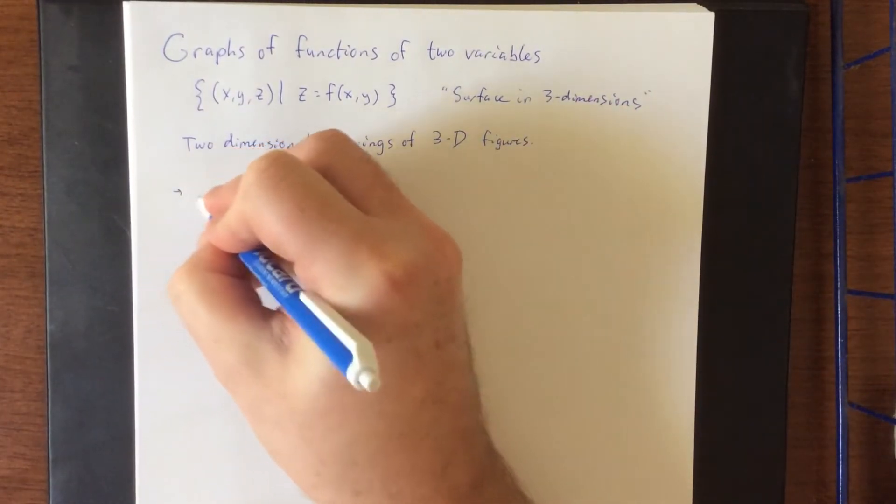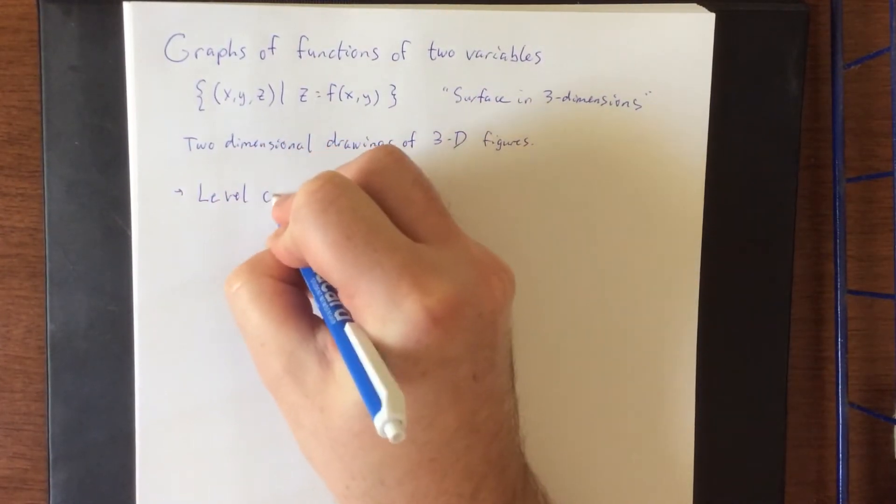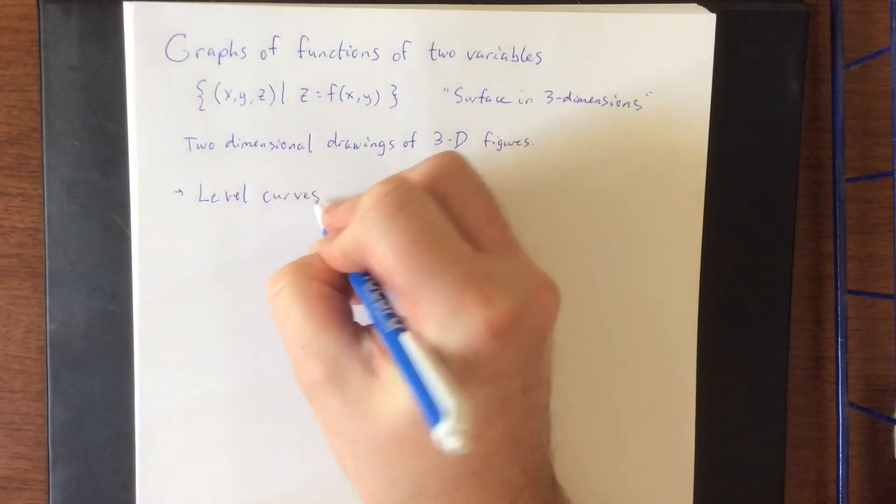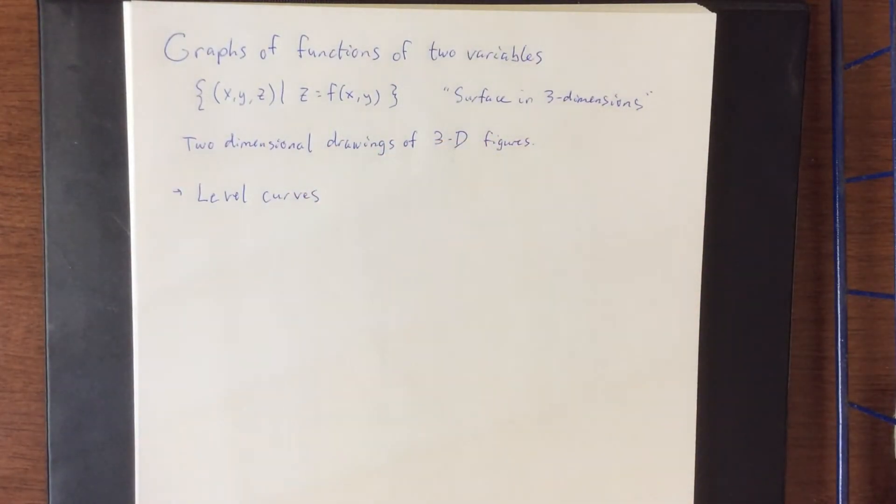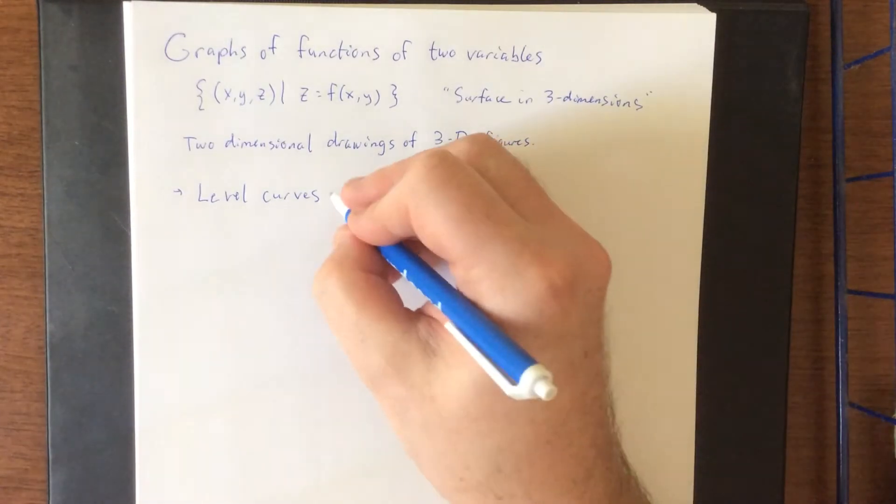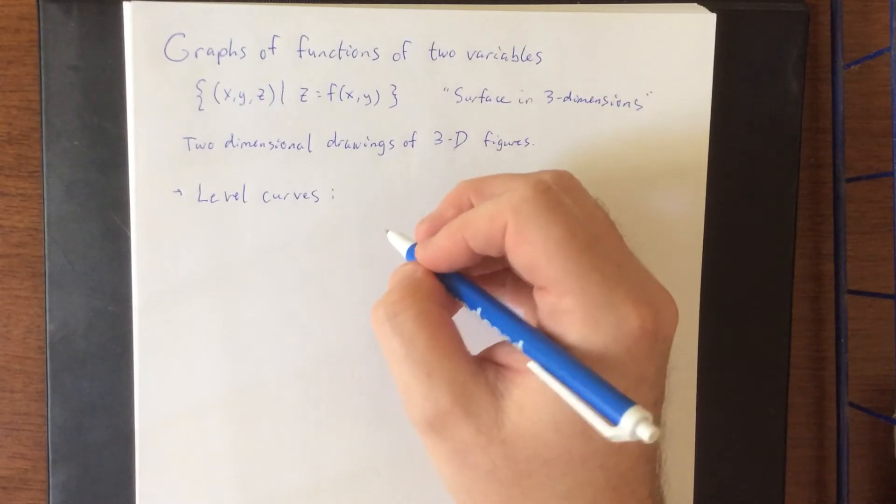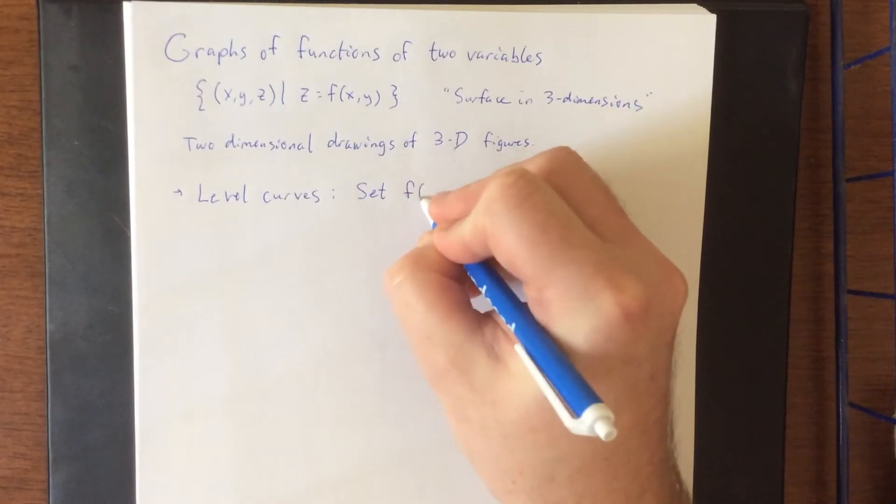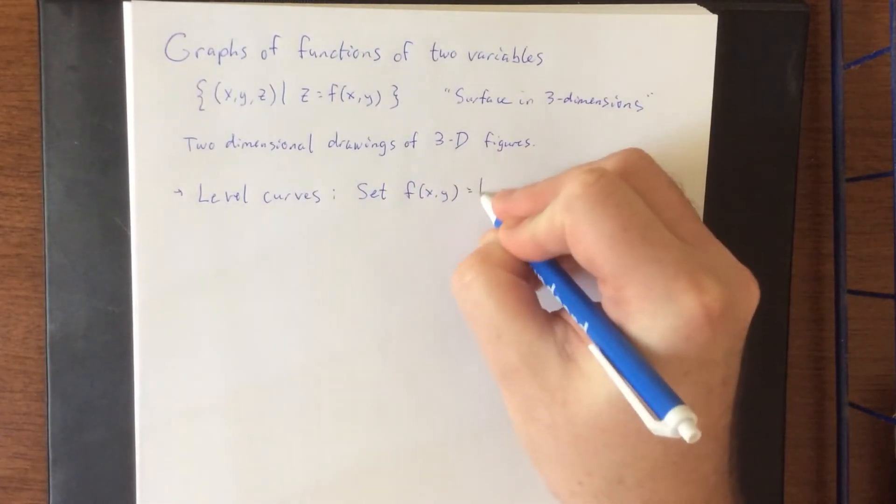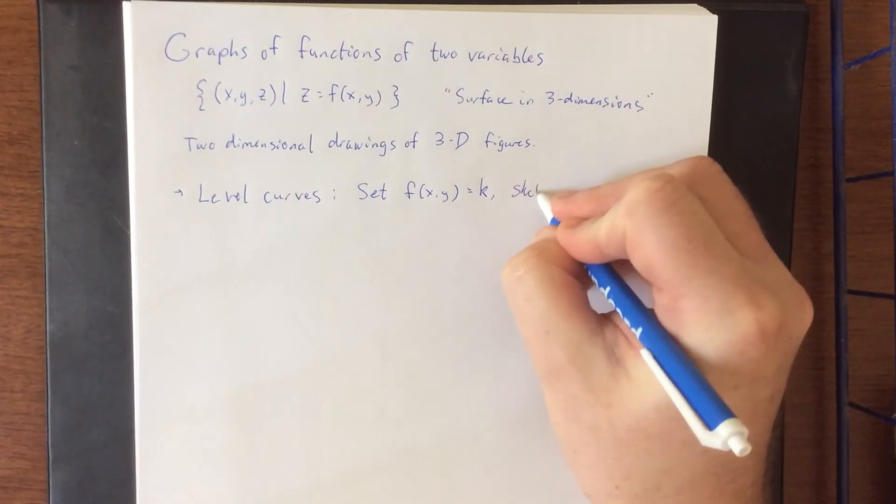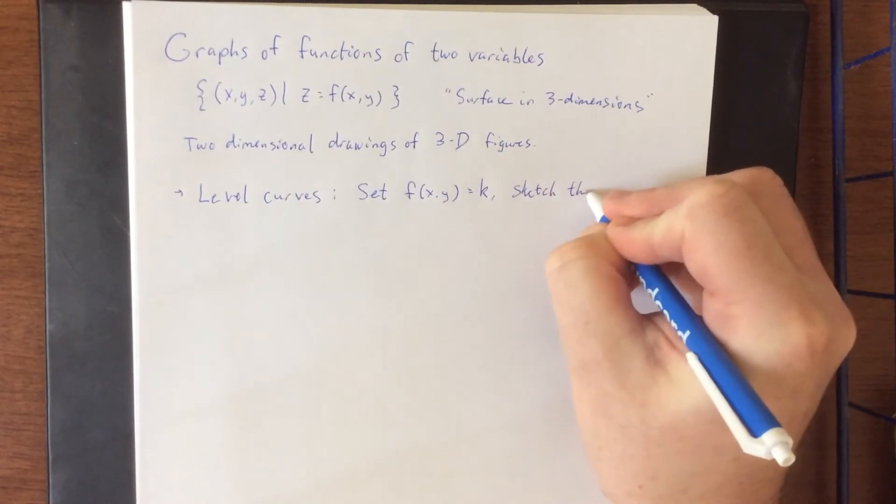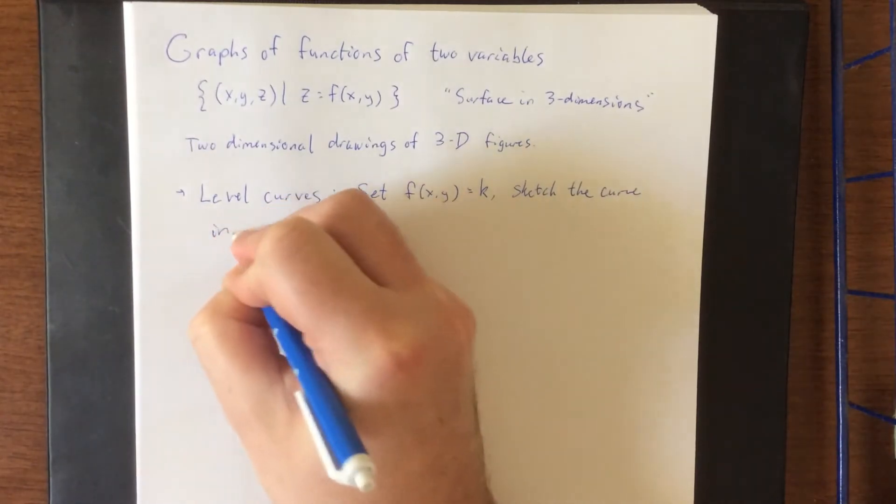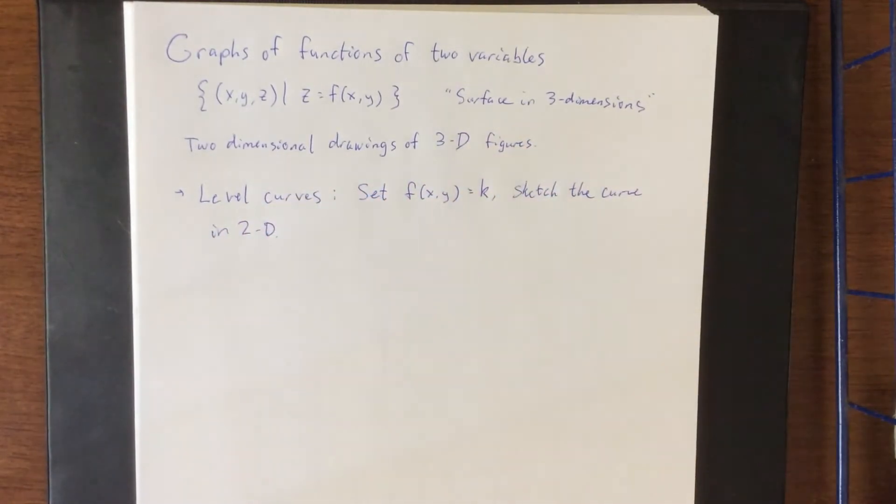One of the ways that we do so is through the use of what we call level curves. When we think of something that is level, we think of something that is sort of horizontal within three dimensions, so a nice consistent z value as x and y change. So the way that we get a level curve is we set the value of our function equal to a constant and sketch the curve in two dimensions.